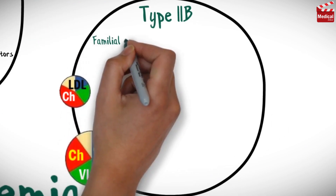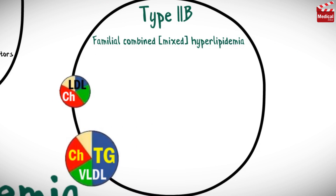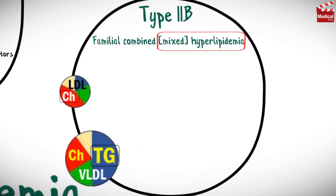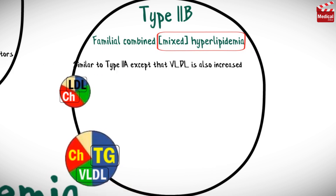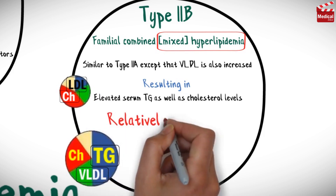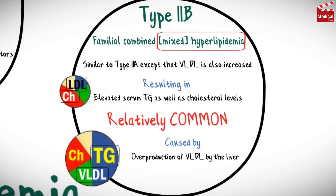Type 2B, familial combined or mixed hyperlipidemia. Mixed hyperlipidemia means that both cholesterol and triglycerides are elevated in the blood, meaning high LDL and VLDL. This type is similar to type 2A except that VLDL is also increased, resulting in elevated serum triglycerides as well as cholesterol levels. This type is relatively common, and is caused by overproduction of VLDL by the liver.